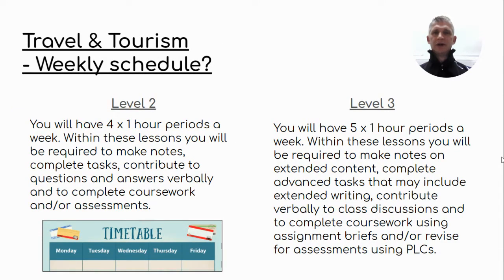In terms of your weekly schedule, if you are attending the Level 2 qualification you will have four one-hour periods a week. Within these lessons you will do basic tasks, complete work, may be involved in questions and answers, and occasionally revise for an assessment or complete coursework. Within our Level 3 course you have an additional hour, giving you five one-hour periods per week. You may complete extended work and tasks that include extended writing and verbal class discussions. There will also be assignment briefs and revision for class assessments, and we use a PLC — a personalised learning checklist — to help ensure students remain on track and achieve the best possible grade.